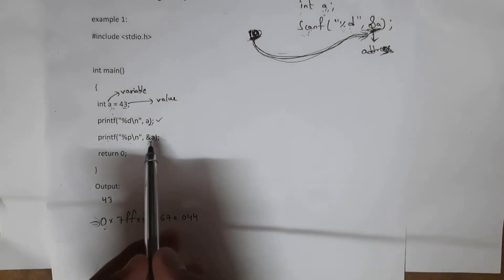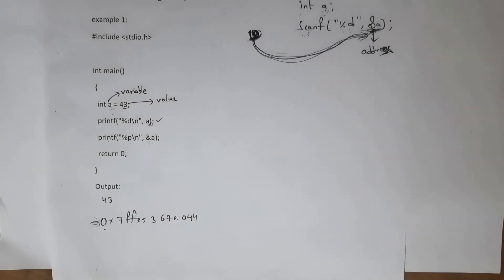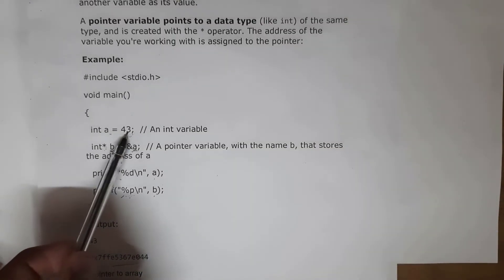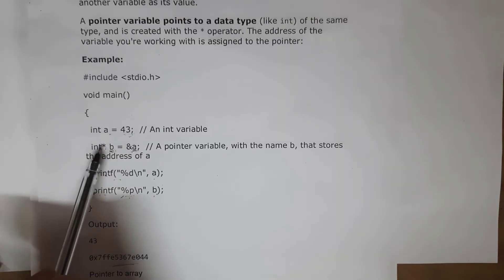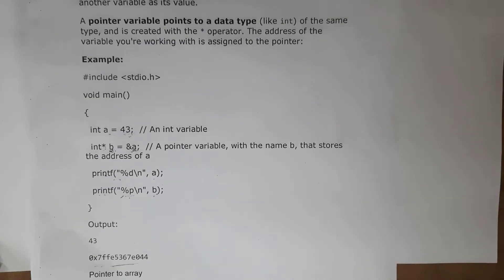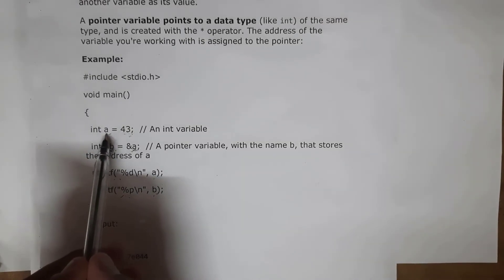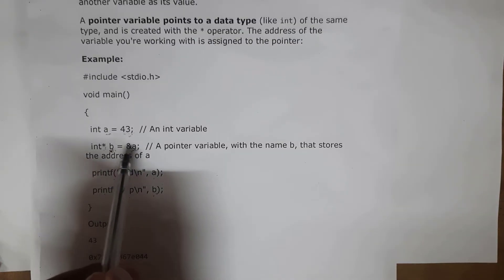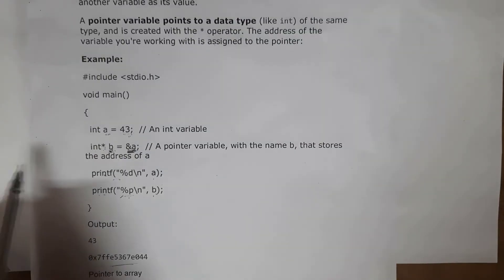Here & represents a pointer, which is why I used %p. We can also create a pointer variable and then assign the address of various variables to it. For example, I wrote int a = 43, and then int *b, where the star (*) represents a pointer variable. Whenever I write int *, this variable b is treated as a pointer variable. By using this pointer variable we can store addresses of various variables. So I wrote int *b = &a, where & represents address — now pointer variable b contains the address of a.